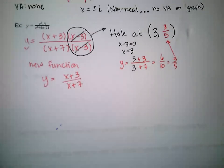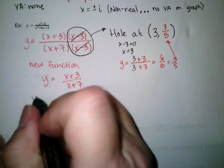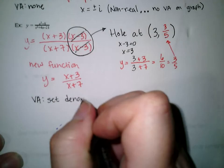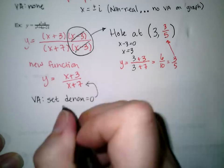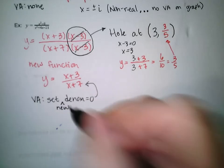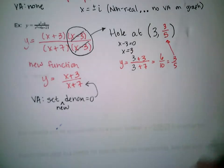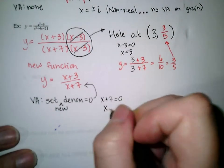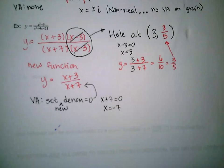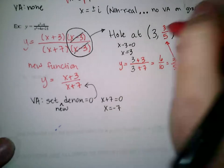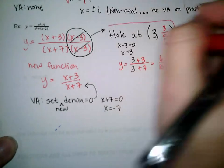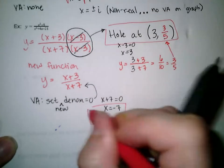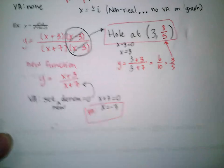To find the vertical asymptote, we set the new denominator equal to zero. So x plus 7 equals 0, giving us x equals negative 7. So we have a hole at 3 comma 3 fifths and a vertical asymptote at x equals negative 7.